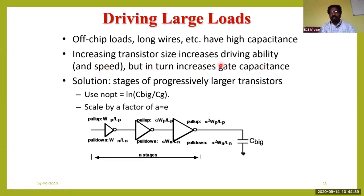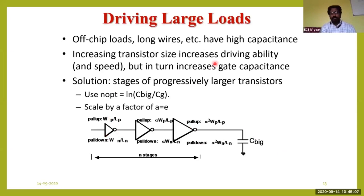If you want speed, then don't worry about gate capacitances, but if you are looking for performance, then think about the capacitance and forget about the speed of the circuit — this is what is called a trade-off. The solution is that the stages of the transistor should be increased; cascading of transistors should be done where different transistors are connected in series to overcome this large capacitance.